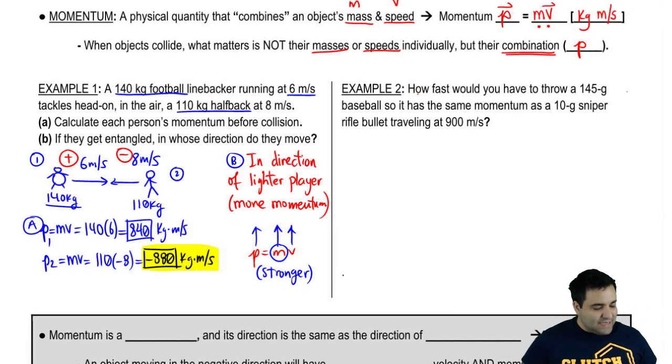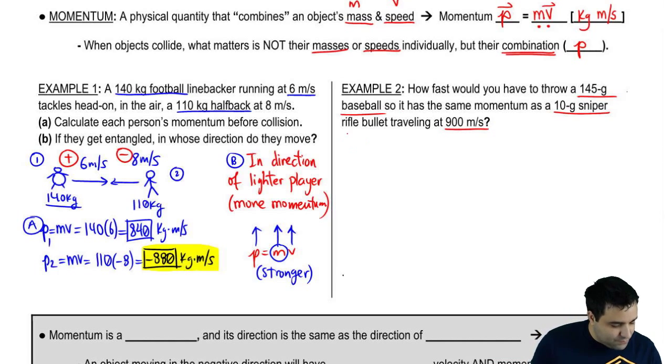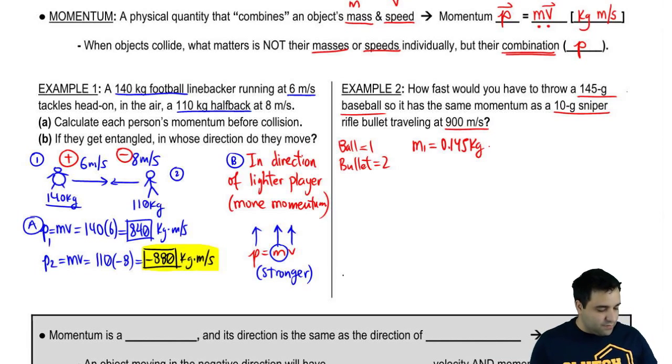So let's do example two real quick. It says, how fast would you have to throw a 145 gram baseball so that it has the same momentum as a 10 gram sniper rifle bullet traveling at 900 meters per second? So the basic setup for this problem is you want to know how fast you have to throw a baseball. So I'm going to call the ball object one and I'm going to call the bullet object two. And I want to know, I know that the mass one is 0.145 kilograms, always in kilograms.